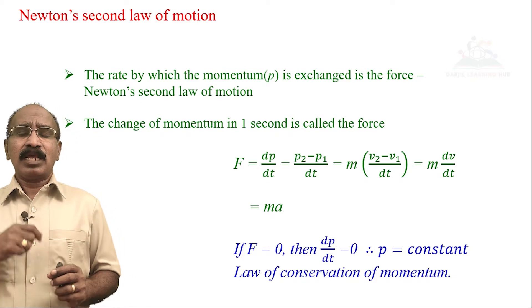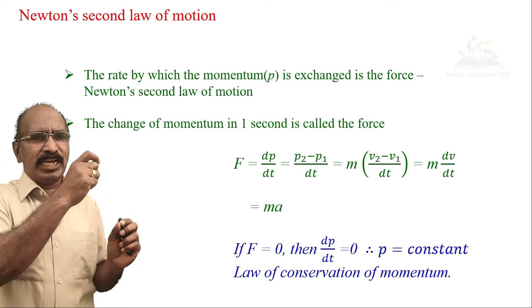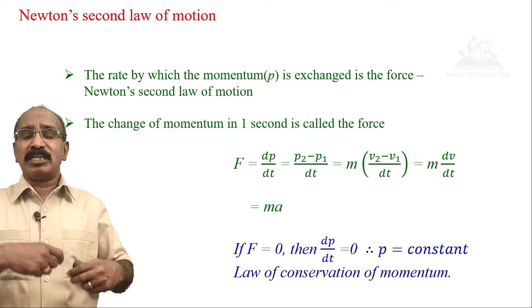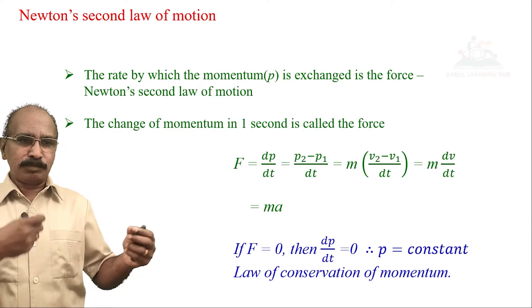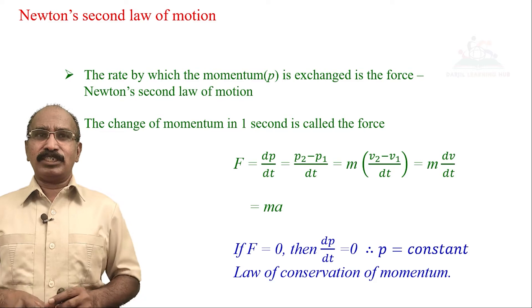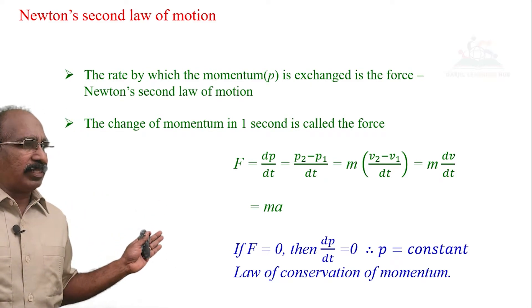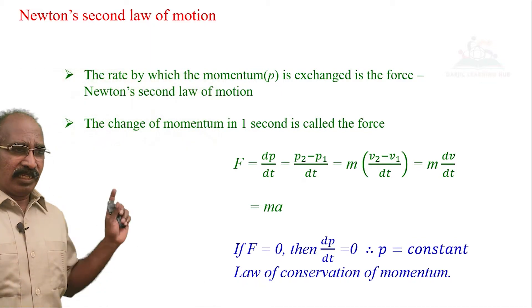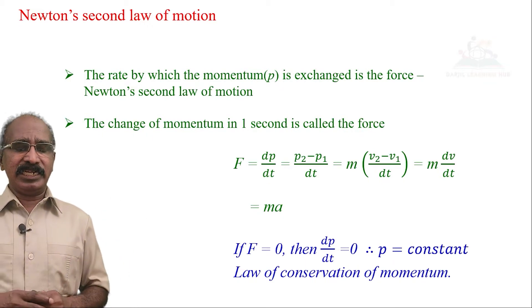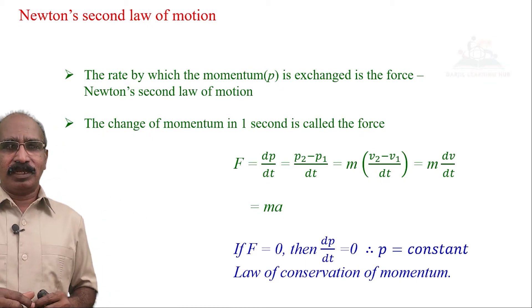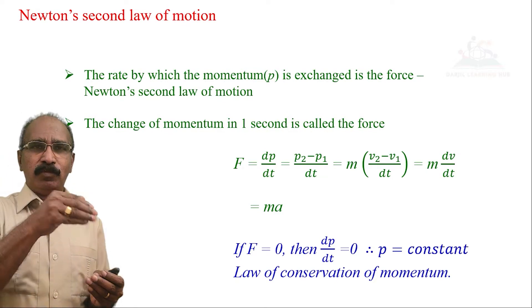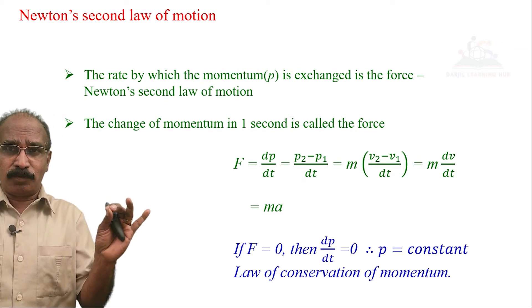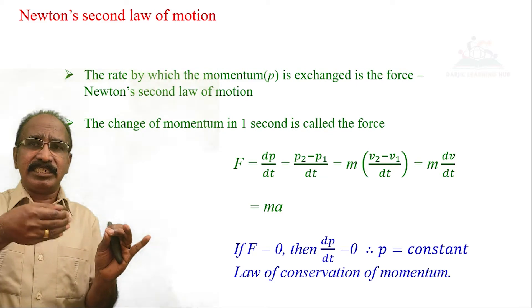Where p is the momentum. The change of momentum is dp = p2 minus p1. p1 is the momentum before collision or before interaction. p2 is the momentum after interaction. The difference between the two is the change in momentum. So the rate of change of momentum is called force — the formula is F = dp/dt.